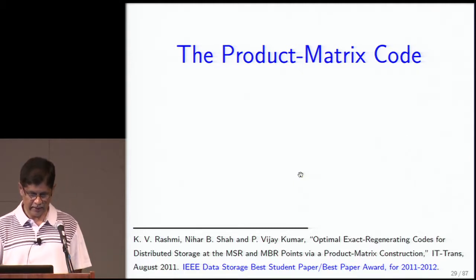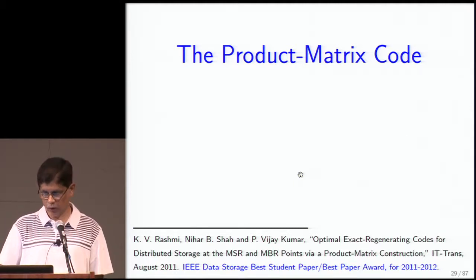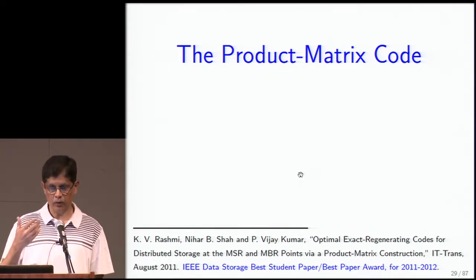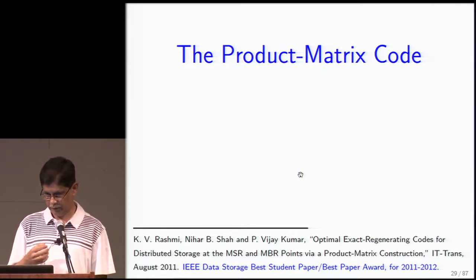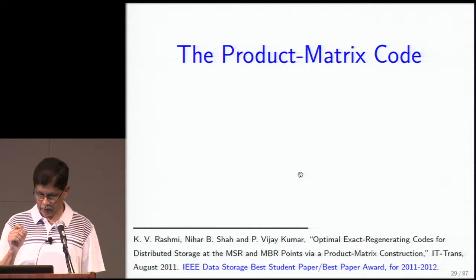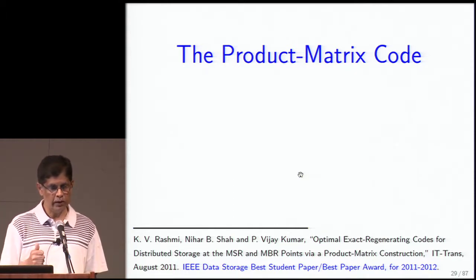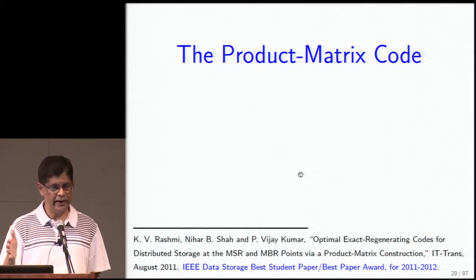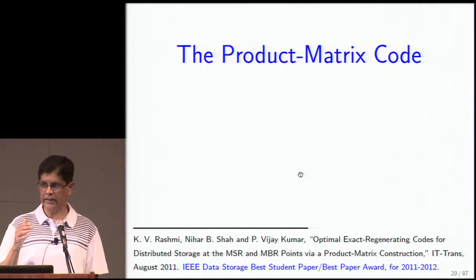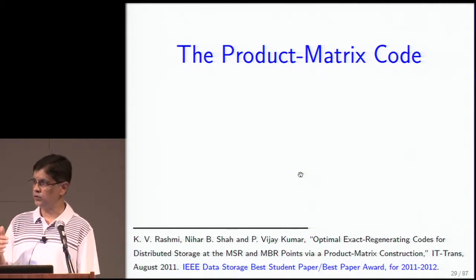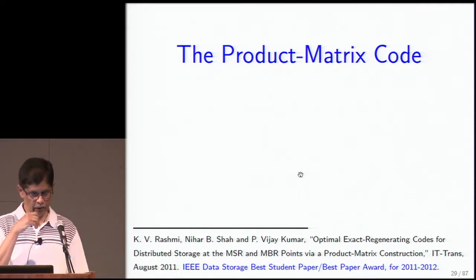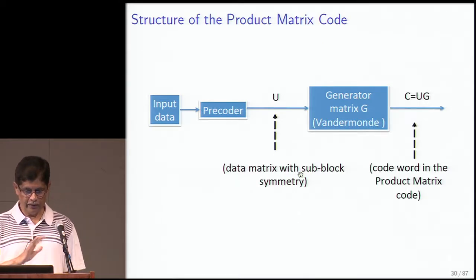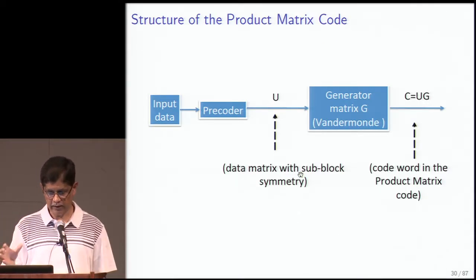The second construction is the product matrix code by Nihar and Rashmi. This construction works for both MBR codes for all parameters, and MSR codes provided the rate is less than half. There is one perspective from which it's very easy to describe: you have your input data stream of file size B, you pass it through a precoder. The precoder's output is a matrix — a redundant matrix arrangement of data symbols — where the redundancy takes the form of sub-block symmetry: the matrix is composed of sub-blocks which are themselves symmetric.